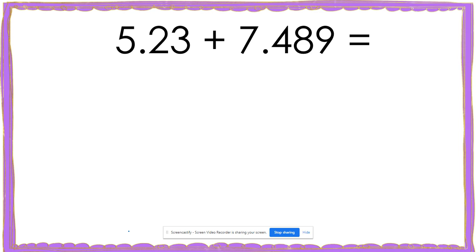In this example, we have 5 and 23 hundredths plus 7 and 489 thousandths.